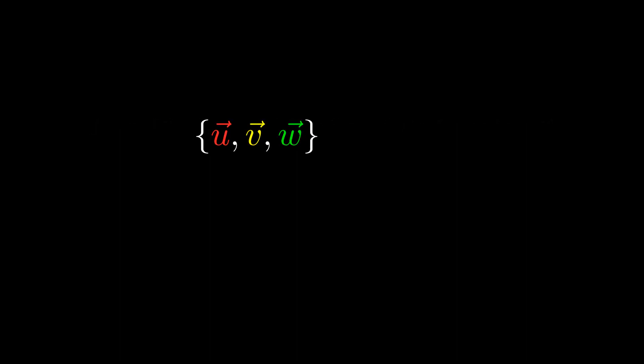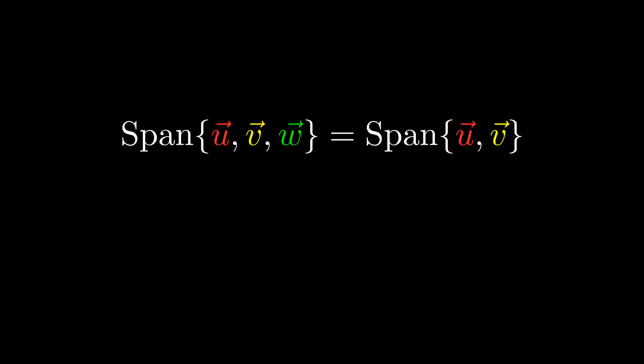Let's say we have some set of three vectors that we know are linearly dependent because the span of u, v, and w is equal to the span of u and v. Now, w is in the span of u, v, and w, so w is in the span of u and v as well because the spans are equal. This means that w can be written as some linear combination of u and v. It turns out that being able to write one vector in a set as a linear combination of the other vectors in the set is an equivalent definition of linear dependence. This is actually where the name linearly dependent comes from. Because w can be written as a linear combination of u and v, we can say that w depends linearly on u and v.